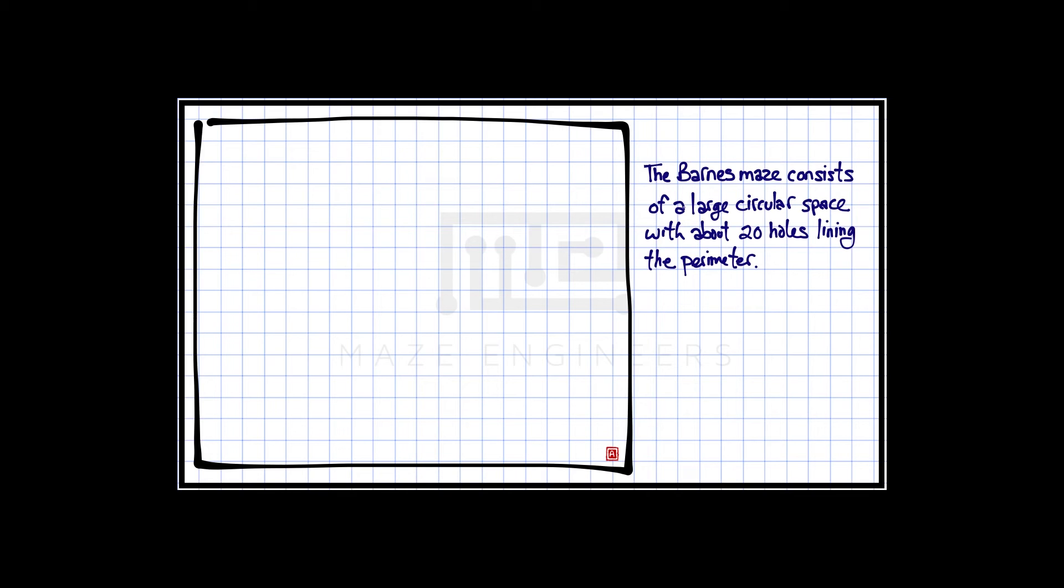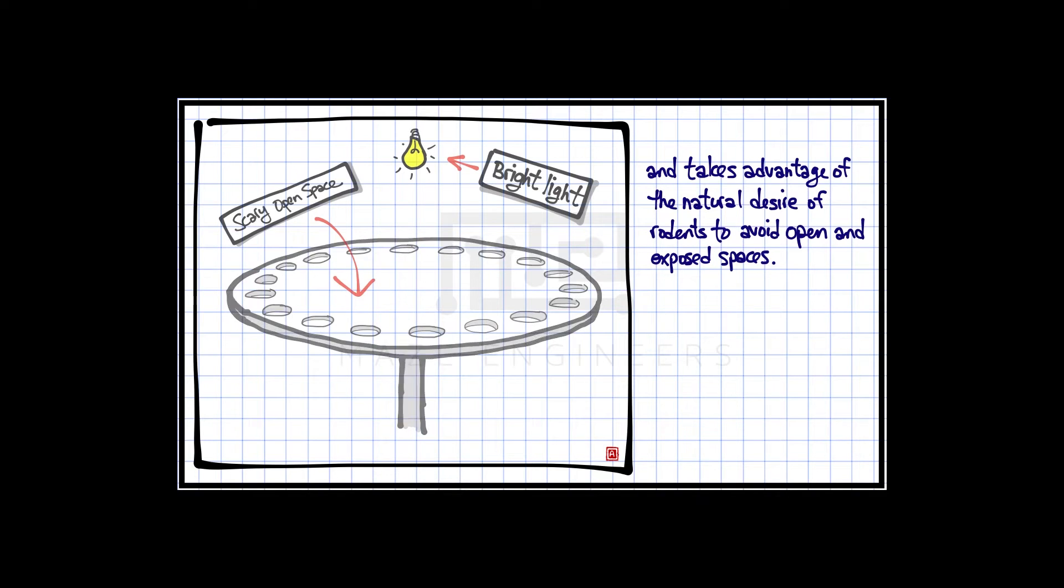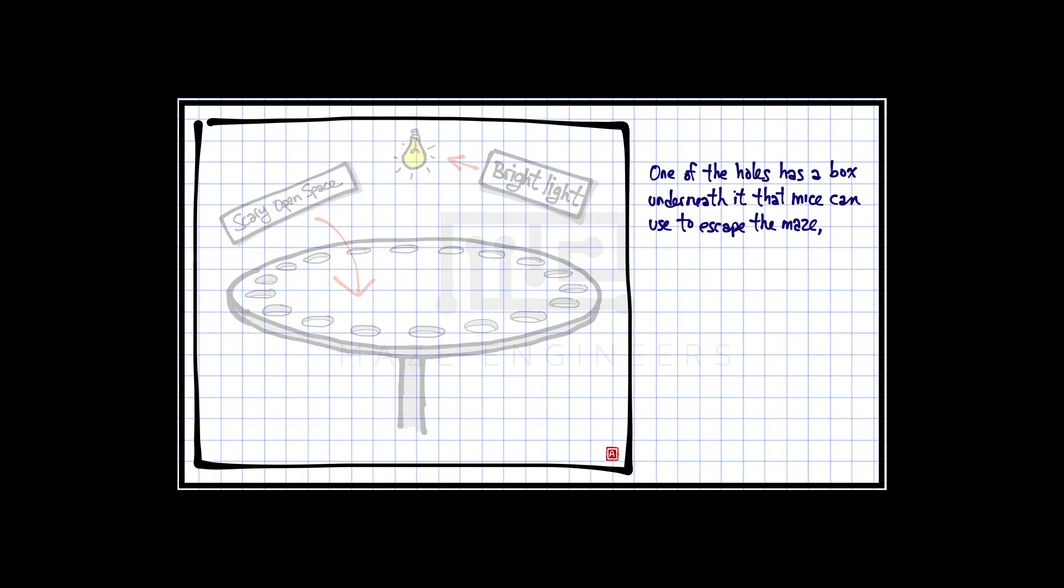The Barnes Maze consists of a large circular space with about 20 holes lining the perimeter and takes advantage of the natural desire of rodents to avoid open and exposed spaces.